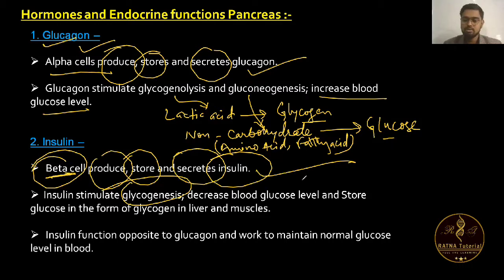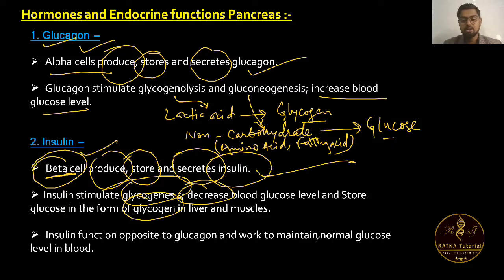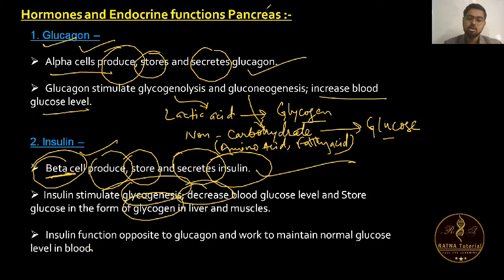Insulin stimulates glycogenesis — the conversion of glucose to glycogen. It decreases blood glucose level and stores glucose in the form of glycogen in liver and muscles. Insulin functions opposite to glucagon and works to maintain normal blood sugar levels.